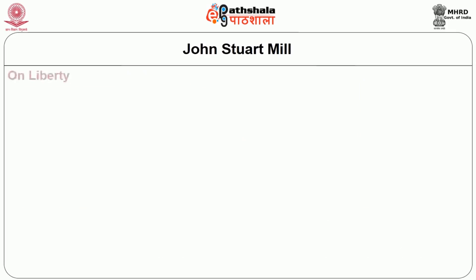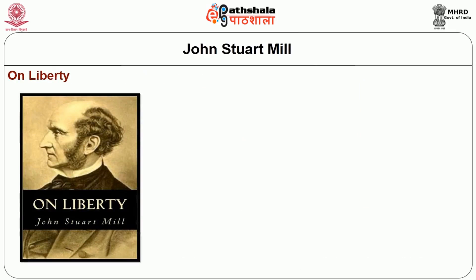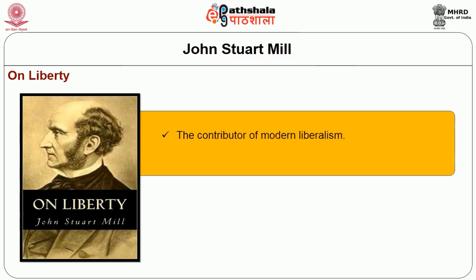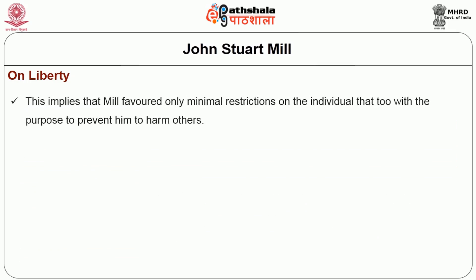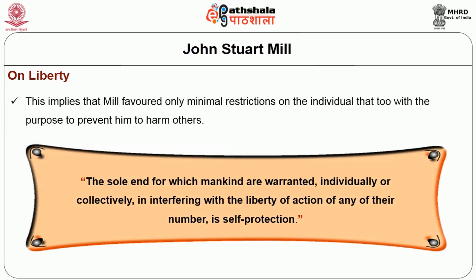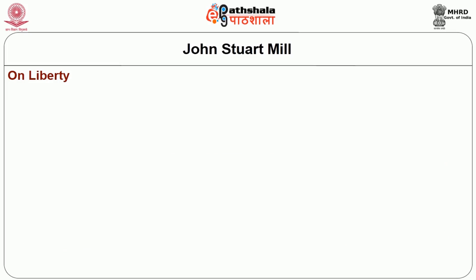Among all the notions given by J.S. Mill, his views on liberty are most significant. In his work On Liberty published in 1859, Mill's arguments clearly make him a contributor of modern liberalism. In this work, Mill strongly campaigns for individual liberty. He argued that the only purpose for which power can be rightly exercised over any member of a civilized community, against his will, is to prevent harm to others. This implies that Mill favoured only minimal restrictions on the individual, with the purpose to prevent him from harming others. In the words of Mill, the sole end for which mankind was warranted, individually or collectively, in interfering with the liberty of action of any of their members, is self-protection. The above stated view paved the way for the foundation of his liberty principle or harm principle.